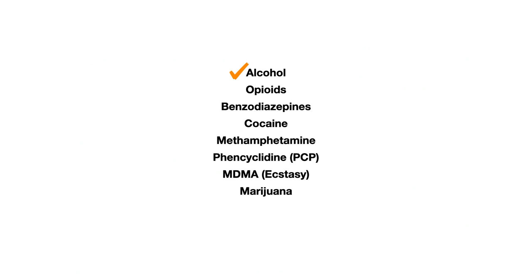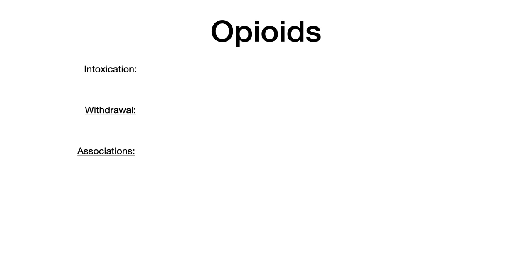That wraps up alcohol. Alcohol is the one drug with the most associations and the most nitty-gritty information that you need to know. Everything from here on forward is going to be extremely straightforward with classic signs of intoxication, classic signs of withdrawal, and relatively fewer associations. So let's talk about opioids.